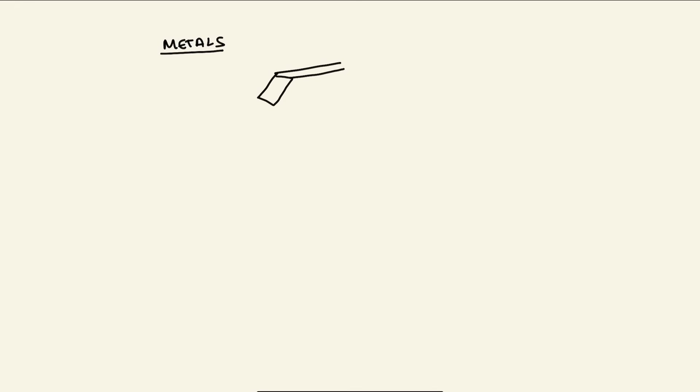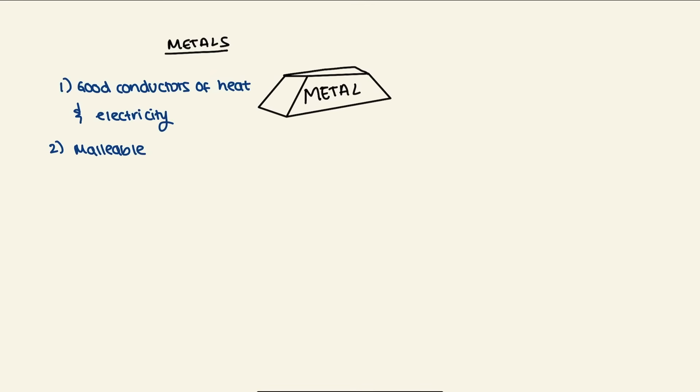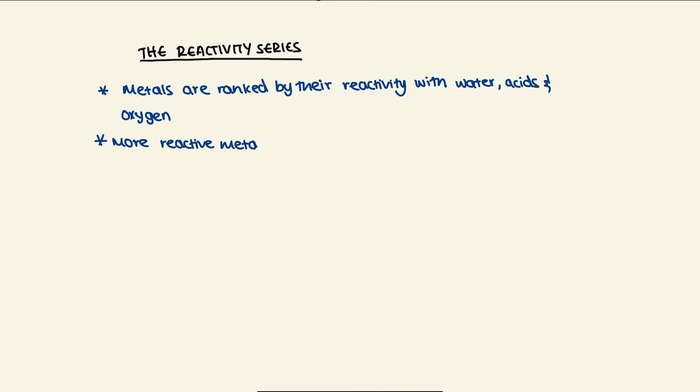Metals: the properties of metals are they are good conductors of heat and electricity, they are malleable, they are ductile, and they are usually solid at room temperature. When talking about the reactivity series, metals are ranked by their reactivity with water, acids, and oxygen. More reactive metals displace less reactive ones in a chemical reaction. Alloys are mixtures of metals that are harder and more resistant to corrosion than pure metals.